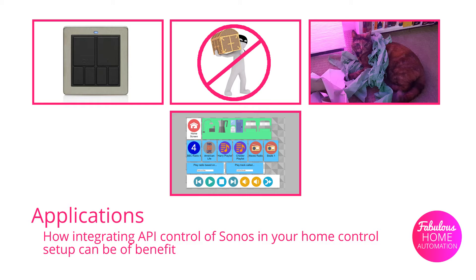You can also use it to automatically start the Sonos players and set a predetermined playlist or alarm sound, so you can integrate it into your security system. You may want to play barking dogs, an alarm sound, or even a voice telling somebody they've entered an unauthorized area. This can be very useful for deterring people who shouldn't be around.